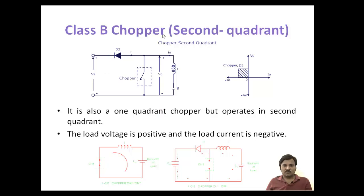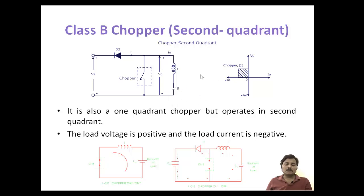Now coming to the class B chopper — it is also called a second quadrant chopper. The configuration of class B chopper has a reverse-biased diode and a switch connected to an RLE load, or a DC motor can also be connected. Generally, the class B chopper is a step-up chopper.